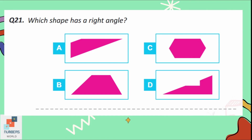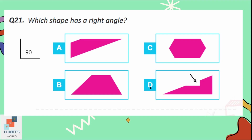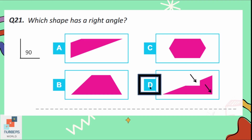Question number 21: which shape has a right angle? A right angle is 90 degrees. Looking at options A, B, and C, there is no right angle in these three shapes. In option D, there are two right angles. So option D is the correct one.